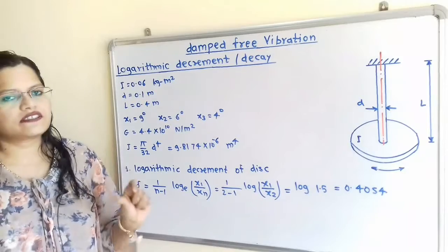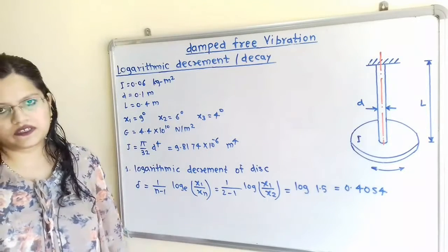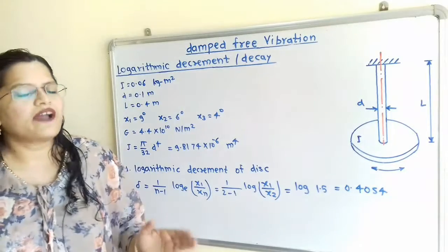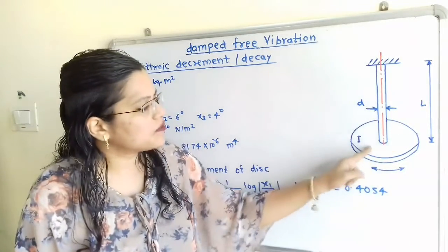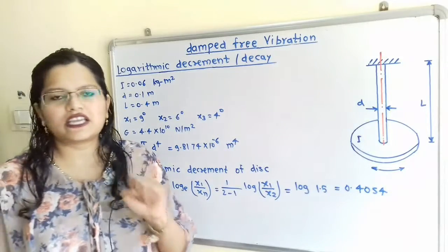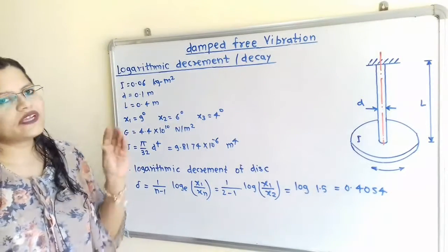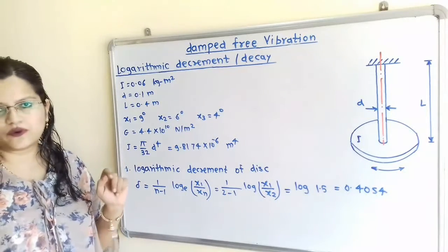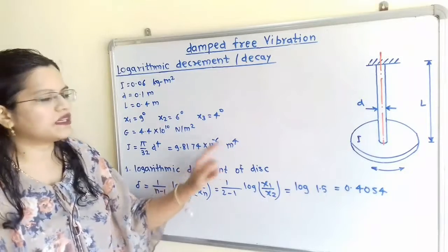The value of G, the modulus of rigidity for this shaft, is given as 4.4 × 10¹⁰ N/m². Now, J, the polar moment of inertia of the shaft, is calculated. This represents the resistance to torsional motion of the shaft — since the shaft is attached to the disc, it offers resistance during torsional vibration. J is in the form of a solid rod, so we use the formula J = π/32 × D⁴. Putting D = 0.1 m, we get J = 9.8174 × 10⁻⁶ m⁴.